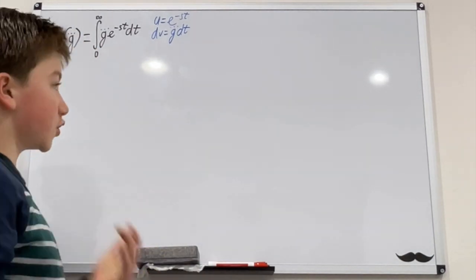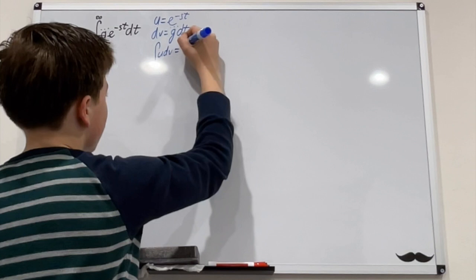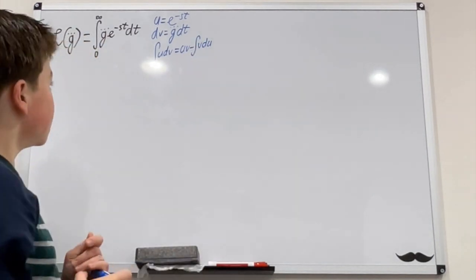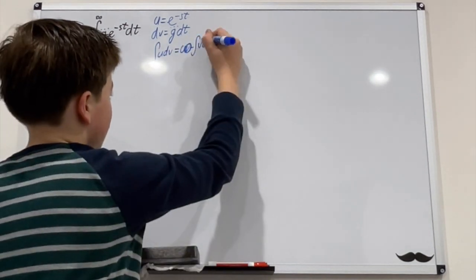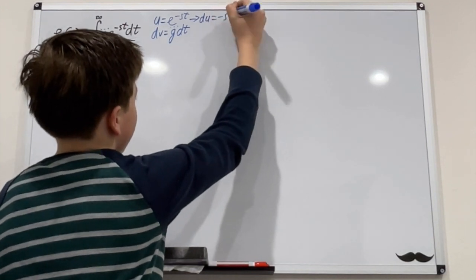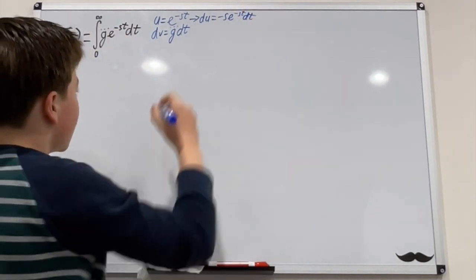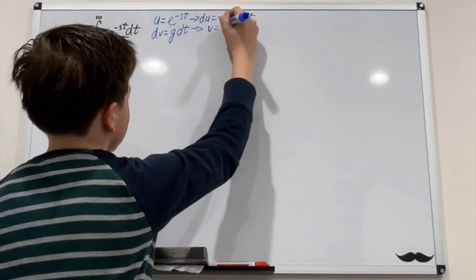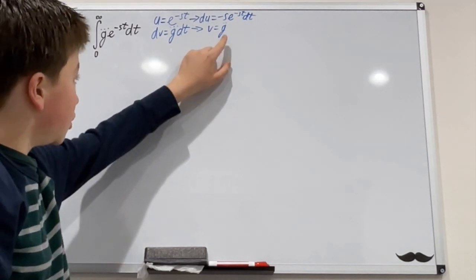So let's recall how integration by parts works: the integral of u dv equals u·v minus the integral of v du. It follows that du will equal negative s·e to the negative st times dt. And then integrating g-triple-dot dt, we get that v equals g-double-dot. Notice that we bring down g with three dots to a g with two dots.